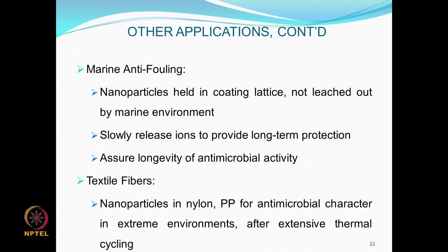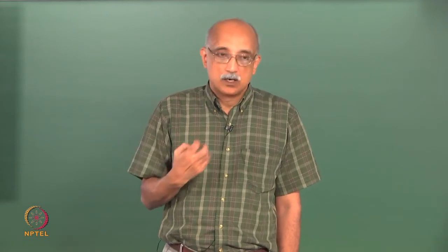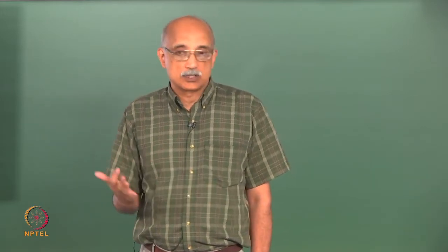Textiles: nano materials can be embedded in nylon, polypropylene and similar materials to provide antimicrobial protection. In battlefield applications, people wear Kevlar vests for protection, but Kevlar only gives so much protection. In close-range or hand-to-hand combat, much greater hardness and rigidity is required. Nanoparticles embedded in Kevlar can give orders of magnitude better protection compared to unfilled Kevlar material — another example of nanotechnology actually saving lives of soldiers.